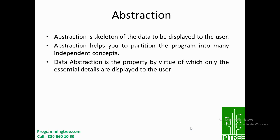Now we will discuss the third point of abstraction: the property by virtue of which only the essential details are displayed to the end user. What does this point mean? Let's understand this with an example.